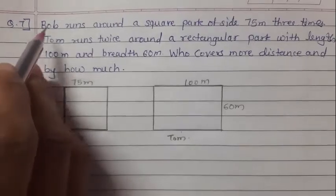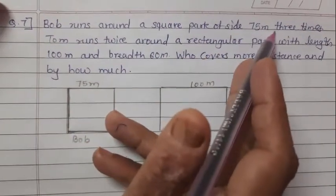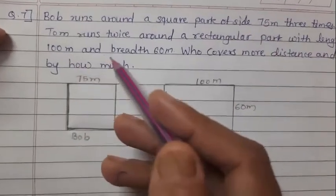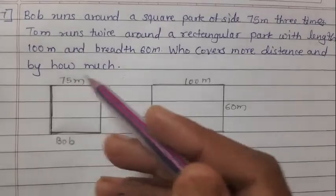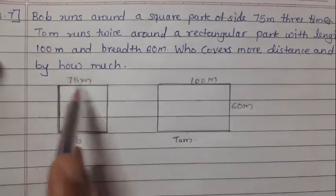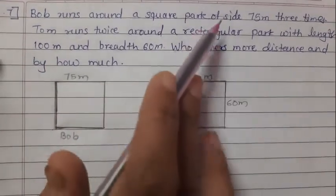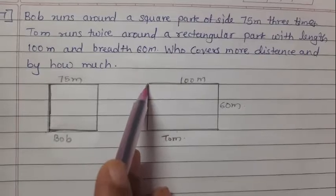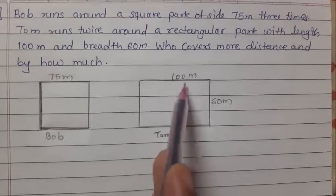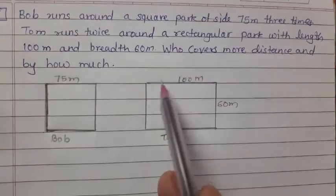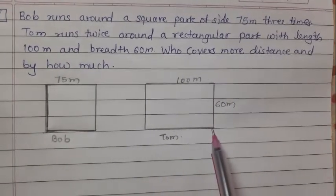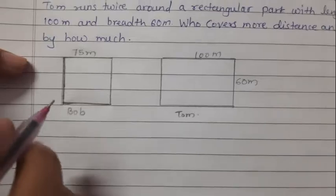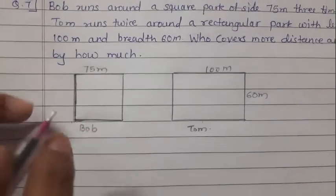Let's solve question number 7. Bob runs around a square park of side 75 meters 3 times. Tom runs twice around a rectangular park with length 100 meters and breadth 60 meters. Who covers more distance and by how much? Bob runs around a square park, so let's find the perimeter of the square park.